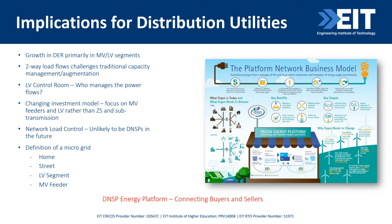Let us see the implications of this on the distributed network. The platform is connecting all the buyers and sellers. There is definitely a growth in DER, primarily in the MV and LV segments. You are now finding two-way load flows, which was not traditionally done in low-voltage control rooms. You have to find who manages the power flow, look at the investment model, focus on MV feeders and LV rather than zone substations. The definition of a micro grid is now at the home, street level, LV segment, and MV segment.